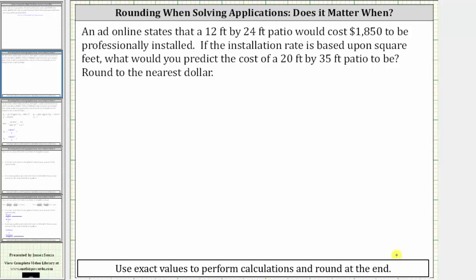Let's look at our example. An ad online states that a 12 foot by 24 foot patio would cost $1,850 to be professionally installed. If the installation rate is based upon square feet or area, what would you predict the cost of a 20 foot by 35 foot patio to be? And we're told to round to the nearest dollar.